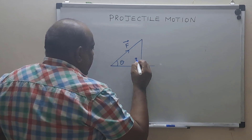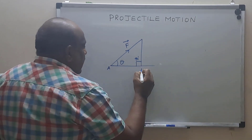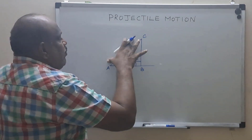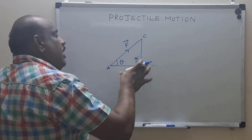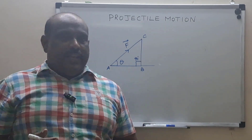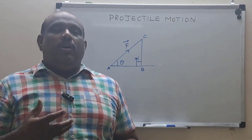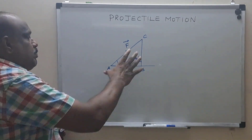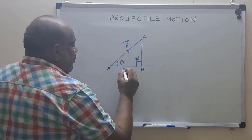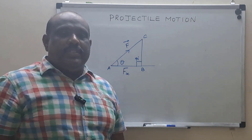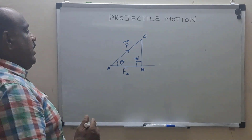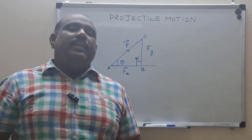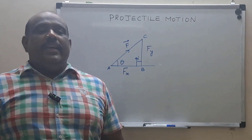Let us draw a vertical from here. This forms a right-angled triangle. Let us name the points A, B, and C. If this inclined force is there, the horizontal component is AB, which we call Fx — the horizontal force — and the vertical component is BC, which we call Fy. So if there is an inclined force, I can resolve it into horizontal and vertical components as Fx and Fy.